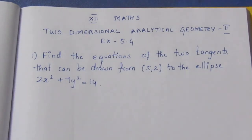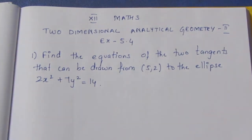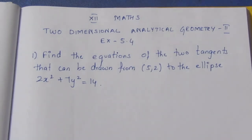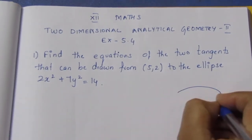Hello viewers, I am Aikli. In the 12th standard, 2 Dimensional Analytical Geometry, Exercise 5.4, the first sum: find the equation of 2 tangents that can be drawn from the point (5,2) to the ellipse.